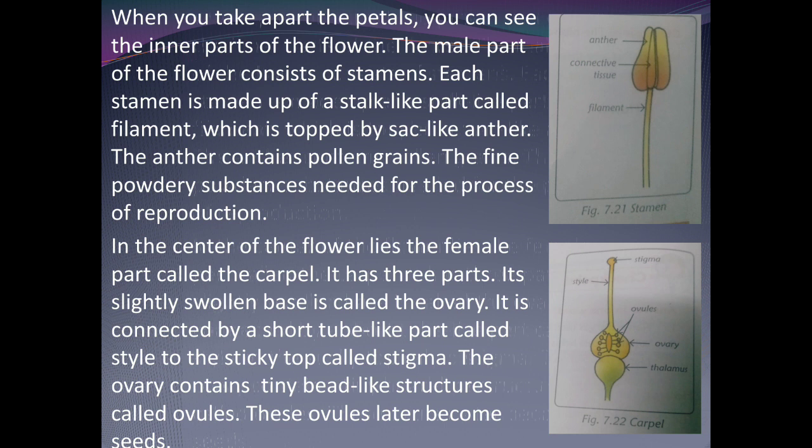In the center of the flower lies the female part, called the carpel. The male part is the stamen and the female part is the carpel. The carpel has three parts. Its slightly swollen base is called the ovary. It is connected by a short tube-like part called the style to the sticky top called the stigma.